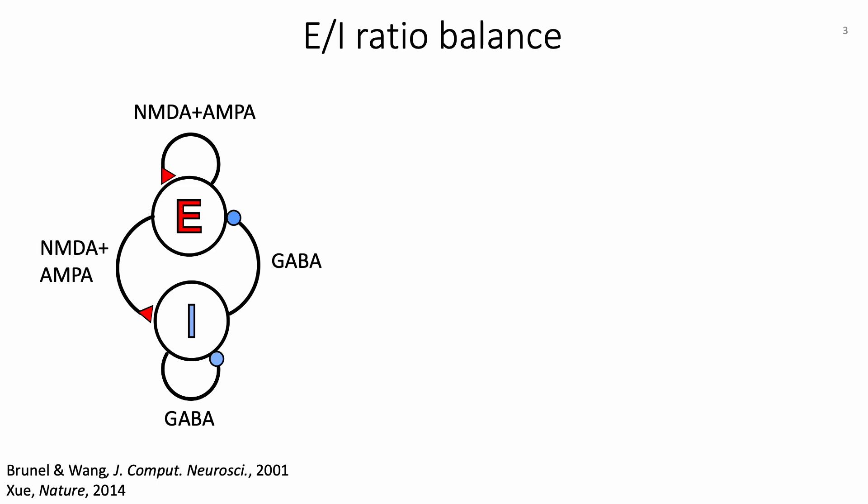Here is a schematic showing the interactions of excitatory and inhibitory neurons. The shapes and colors of the arrows represent the type of connection: a red triangle denotes an excitatory connection, while a blue circle denotes an inhibitory connection. Neuronal excitations are mainly mediated through NMDA and AMPA receptors, and inhibition through GABA receptors.